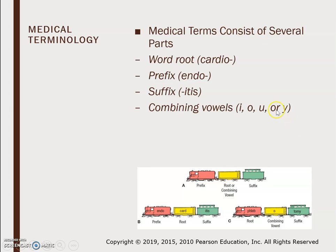Medical terms consist of several parts: the word root, the prefix, the suffix, and the combining vowels. The prefix comes before the root, and the suffix comes last. For example, in endocarditis, the prefix 'endo' comes before the root 'card,' and the suffix is 'itis,' meaning inflammation.